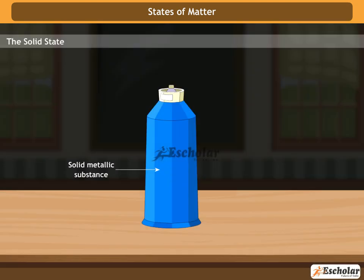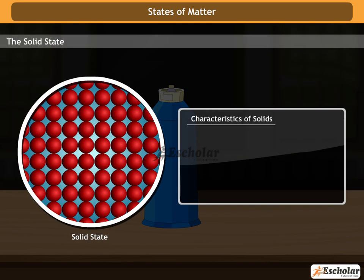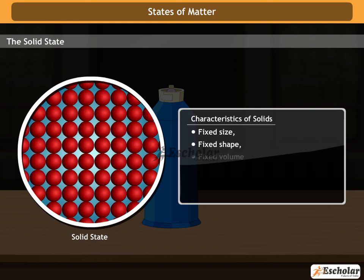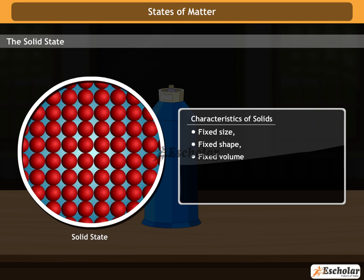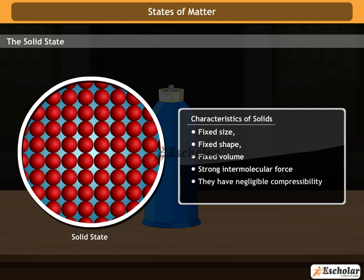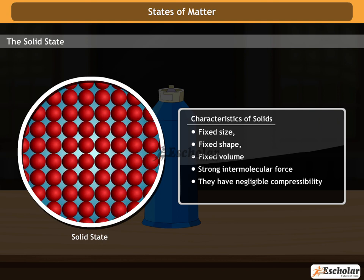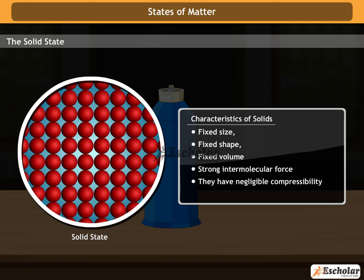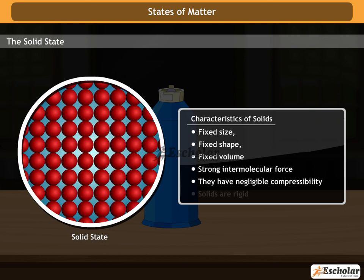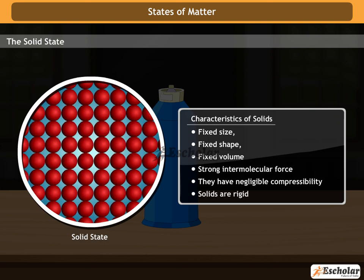Characteristics of Solids: Solids have a fixed size, fixed shape, fixed volume, and strong intermolecular force. They have negligible compressibility, due to the presence of very little intermolecular space between the constituent particles of solids.